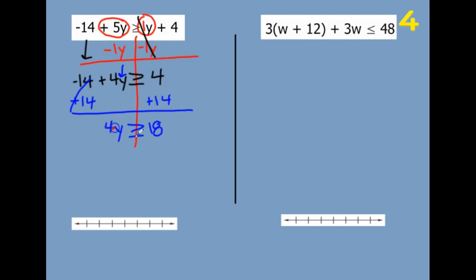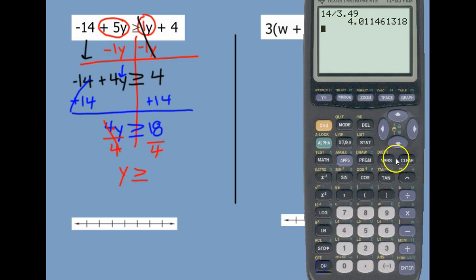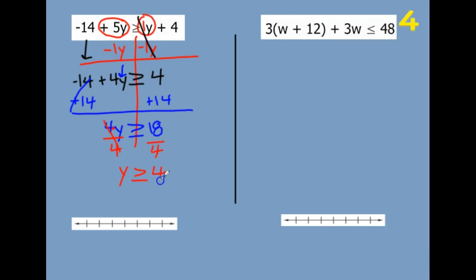The opposite of multiplying by 4 is divide by 4. So we have y is greater than or equal to — well, 18 divided by 4 is not going to be a nice number. Let me type it in: 18 divided by 4 gives me 4.5.